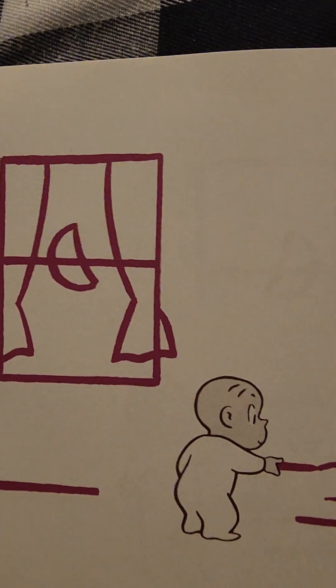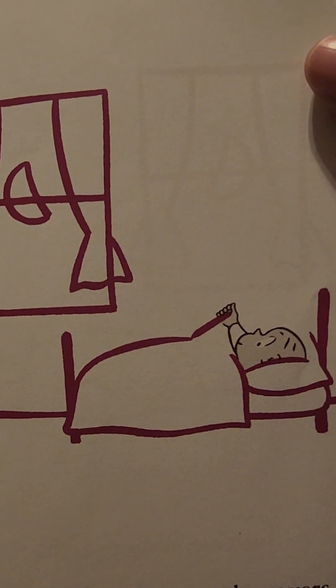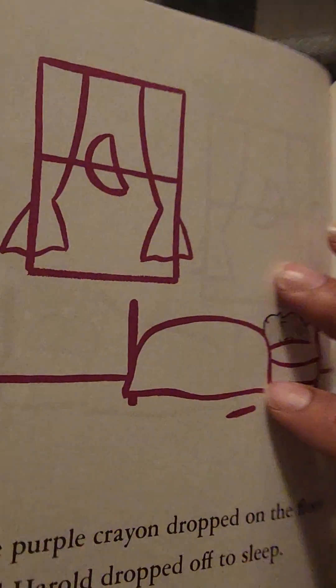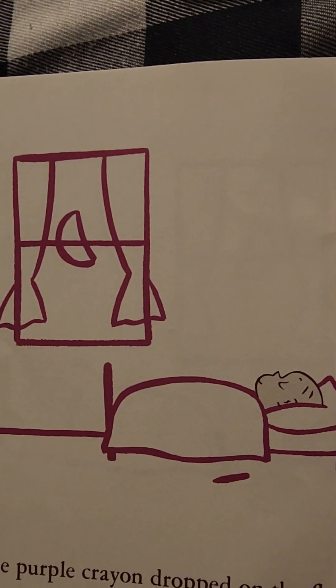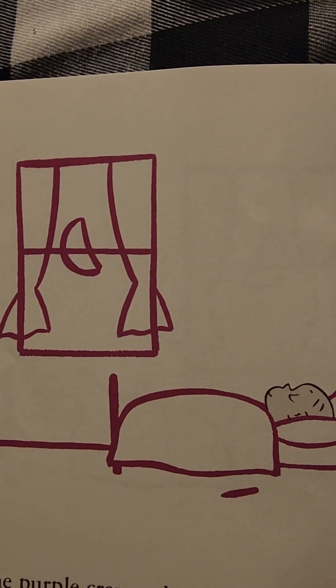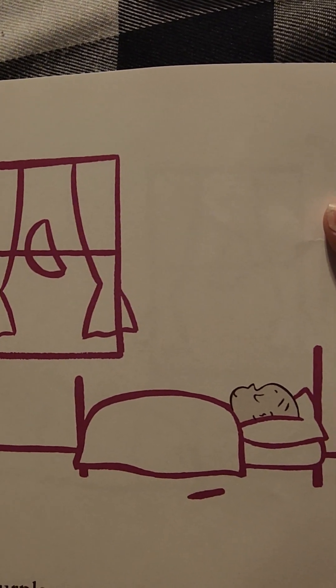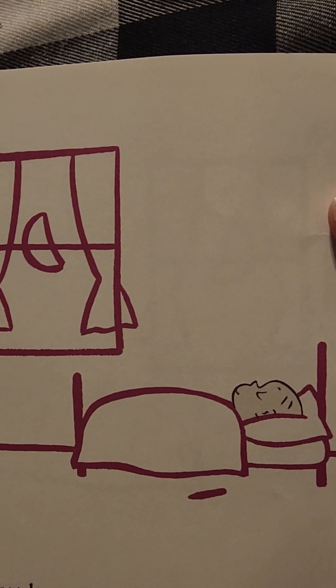And then Harold made his bed. He got in it and he drew up the covers. Look at that, and the purple crayon dropped on the floor and Harold dropped off to sleep. How sweet is that.